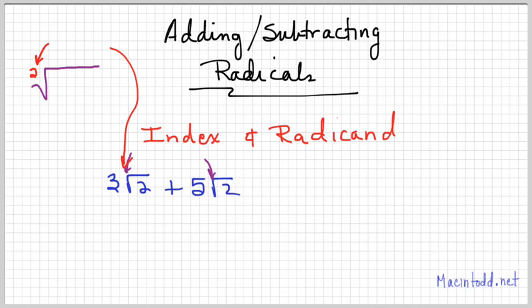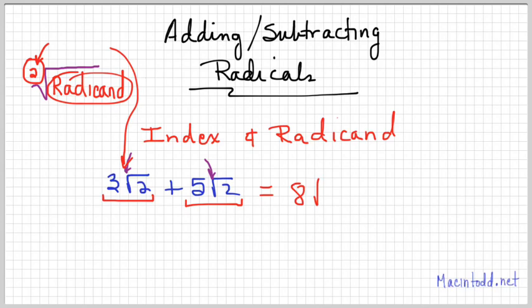Underneath is the radicand. So to add two radicals together they have to have the same index—both be square roots, cube roots, or fourth roots—and the same radicand. In this problem I've got 3√2s and 5√2s, so together I have 8√2.